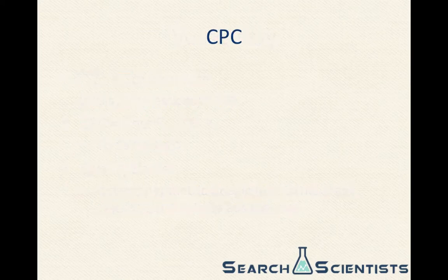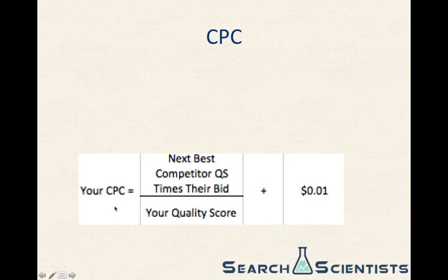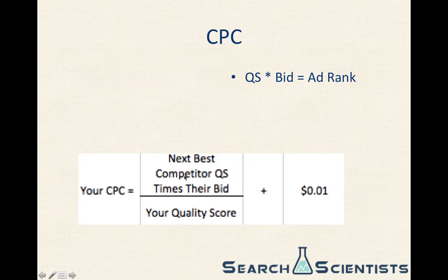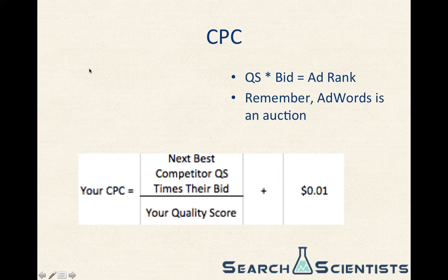So let's talk about how CPC is actually calculated. Here's a little image. Your CPC — what you actually pay — is calculated in this way: it takes the competitor below you and their quality score multiplied by their bid. This is known as the ad rank. So quality score times bid is how Google ranks ads. Your CPC is calculated by the competitor below you's ad rank divided by your quality score, plus one penny. AdWords is an auction, but it's a special type of auction because it's not just bid-based — it's bid times quality score, so it's ad rank based.